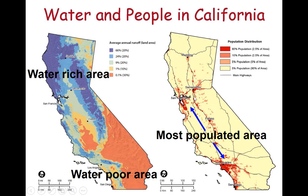It's also important to understand that central California is agriculture-rich, and agriculture needs a lot of water. A lot of water in the state is used to provide food for the population, which is grown in the central and southern areas.